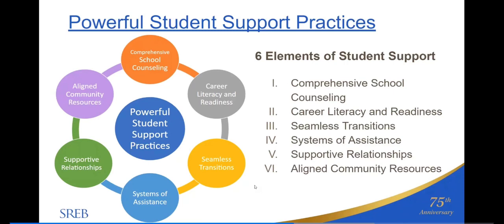Additional targeted assistance is available for students who enter school during the school year. Four: systems of assistance — each student has equitable access to accelerated learning opportunities through a school-wide system of intervention and enrichment programs that target and support individual learning needs. Five: supportive relationships — each student has support through adult mentoring and advocacy, advisory programs, co-extracurricular activities, or community partnerships. And six: aligned community resources — each student has equitable access to community resources and partnerships that provide wraparound support and services to address individual needs.